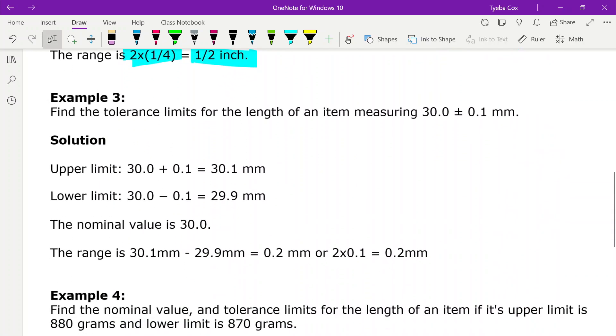Example three. Find the tolerance limits for the length of an item measuring 30.0 plus or minus 0.1 millimeters. So our upper limit is going to be our target value. So our target value is the 30.0 plus the 0.1. We end up with 30.1 millimeters.